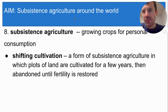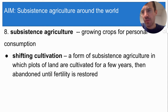The first type is called Shifting Cultivation. Shifting cultivation means that plots of land are cultivated for a few years, and then they are abandoned and left alone for a few years to allow the soil's fertility to be restored. After a few years, the farmers come back to the original plot of land and grow crops on it for a few years, then they abandon it again, and the cycle is repeated. This is called Shifting Cultivation because the farmers are shifting their fields every few years from one plot of land to another and then back again.